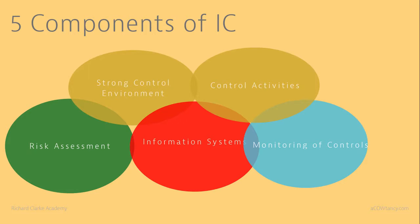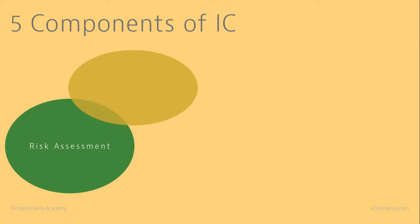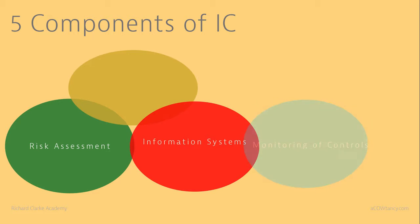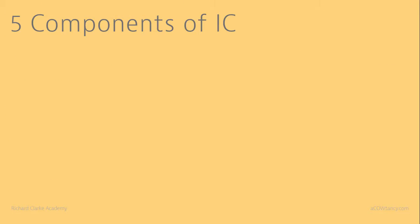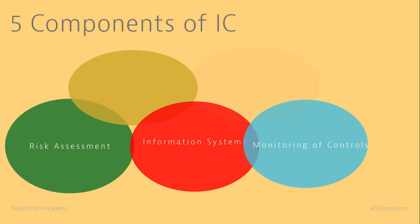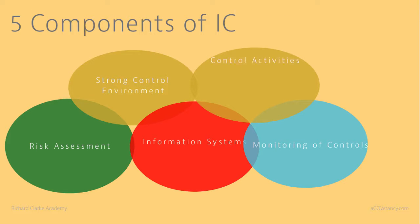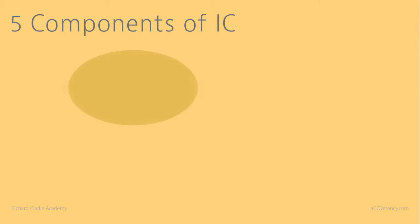So there are five components of internal control: a strong control environment, risk assessment, information systems, monitoring of controls, and control activities. I want you to remember these five. Here's a quick test — which one is missing alongside risk, information systems, monitoring, and control activities? The answer is strong control environment.